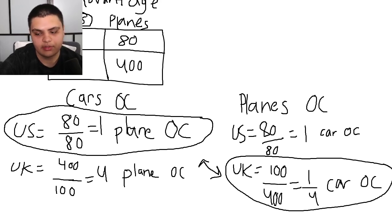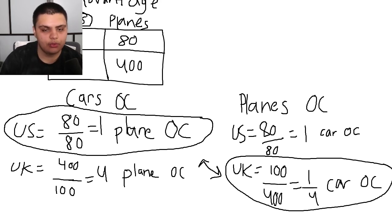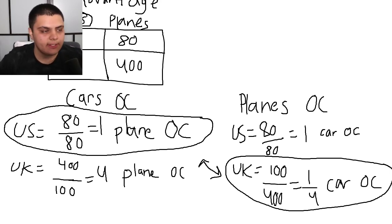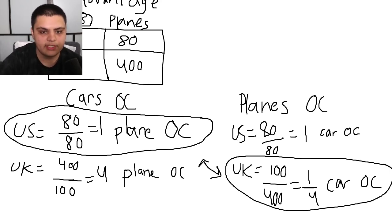This is why trade is beneficial — it leads to the most economically efficient scenario. It avoids efficiency loss from producing goods that cost more to make than to import. Countries trade for whatever deficits they have and reach a more economically efficient equilibrium. This understanding of comparative advantage will lead us into more trade topics as well.